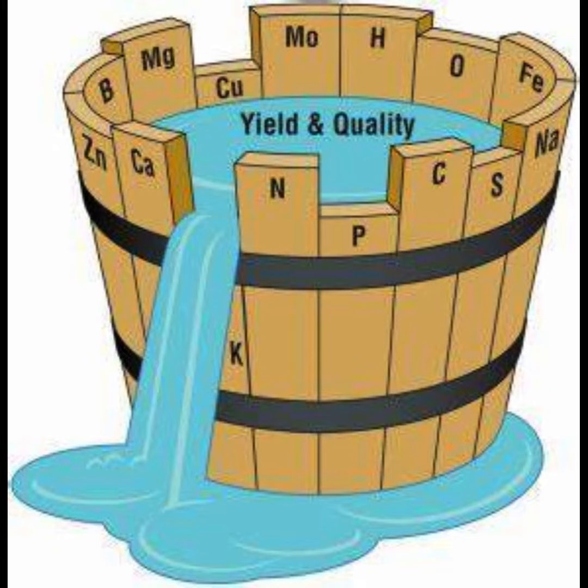The law can be summarized as follows: the growth and development of a population or organism are limited by the essential resource that is in the shortest supply relative to the organism's needs. In other words, it doesn't matter how abundant other resources may be — if one critical resource is deficient, it will limit the overall growth or productivity of the system.